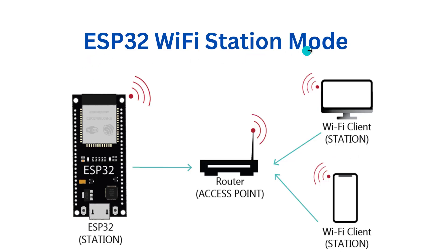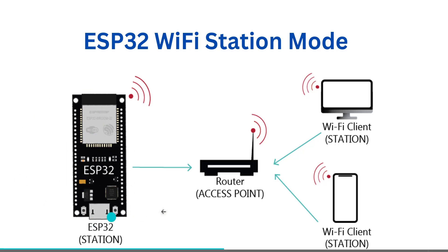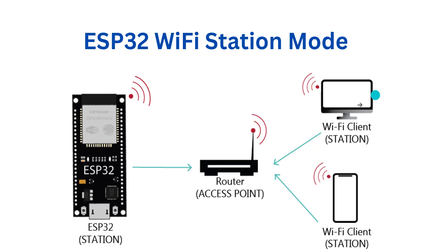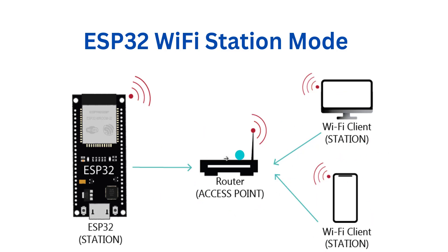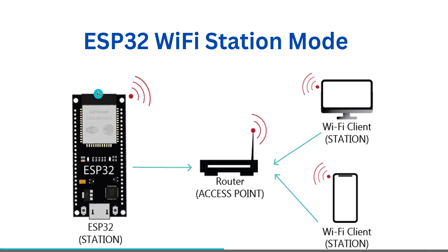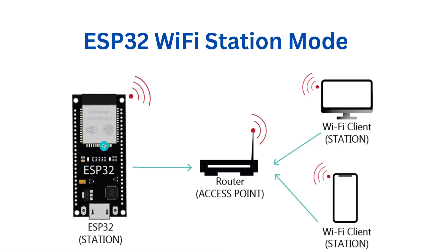In ESP32 Wi-Fi Station mode, ESP32 works like a Station. This is the Router, this is the Access Point. To this Access Point, we connect our Wi-Fi Station — like a computer or mobile phone. Same way, we connect our ESP32 to the Router or Access Point. Then through the Access Point, our ESP32 gets the internet, so that this ESP32 can talk to a computer or mobile phone.